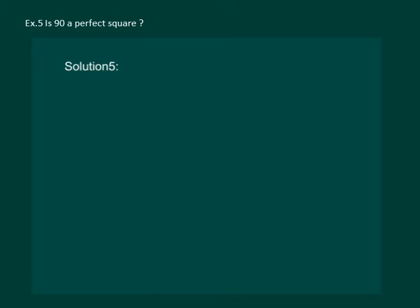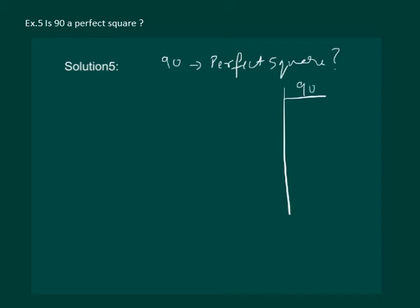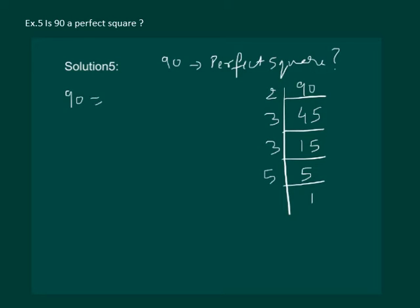Let us read the question: Is 90 a perfect square? We have to find out whether 90 is a perfect square or not. Let us prime factorize 90. Starting with 2, we get 45. Then dividing by 3 gives 15. Again by 3 gives 5. And 5 divided by 5 gives 1. So we can write 90 as 2 × 3 × 3 × 5.